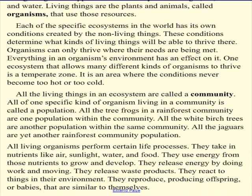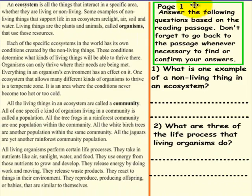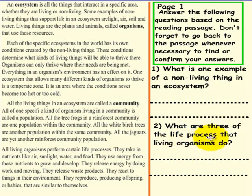Please have a student come up to the SMART Board for the very first series of questions in reading and comprehension. Page 1. Please do not pick up a pen until you are asked to do so. Answer the following questions based on the reading passage. Don't forget to go back to the passage whenever necessary to find or confirm your answers. Question 1: What is one example of a non-living thing in the ecosystem? Question 2: What are three of the life processes that living organisms do? Please pick up a pen to answer these two questions. Do that now.